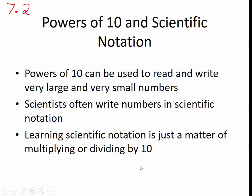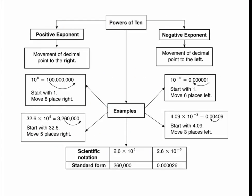To do that, we'll have to use some negative exponents and decimals as well. Let's look at an overview of what we're going to cover. Powers of 10 can have positive exponents or negative exponents. If they have a positive exponent, the decimal point will move to the right.